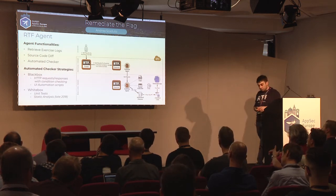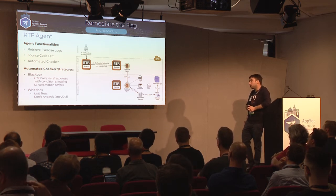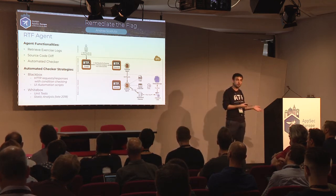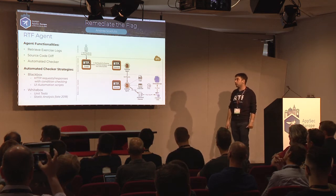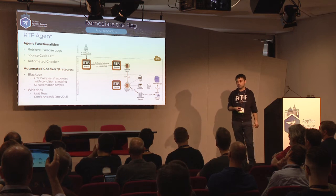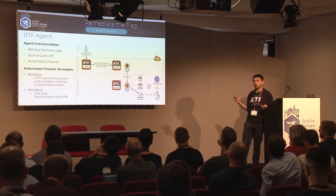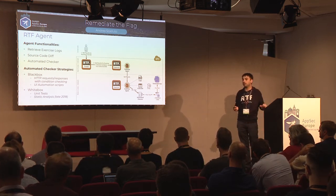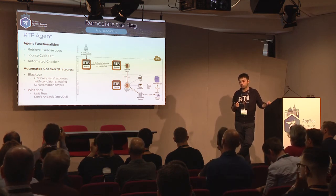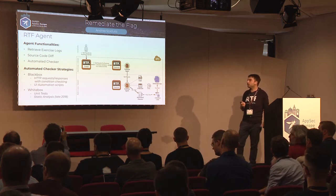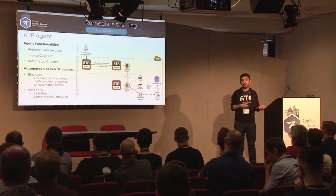The RTF agent runs on each RTF exercise and provides several functionalities: retrieving logs from the exercise, performing the code diff between the original and modified code, and serving as the interface to run the automated checker. When a user requests results, the RTF portal identifies the container, requests via the RTF gateway, the gateway contacts the RTF agent on the user's exercise container, and runs the automated checker. The automated checker is designed to be completely agnostic from the actual tests and strategy used to verify whether an issue is vulnerable or not.